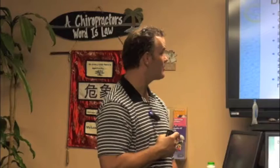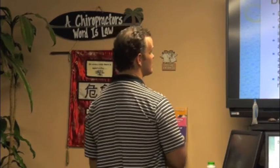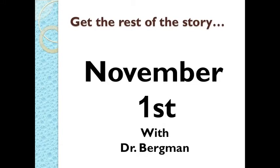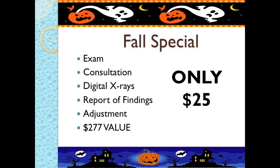Digestive enzymes — Dr. Bergman is going to talk about this soon. They are classified based on their target substrates: proteases and peptidases split proteins into amino acids; amylases break down carbohydrates — you get amylases in your saliva, which is why carbohydrates start to taste sweet as they break down into sugars; lipases split fat into three fatty acids in a glycerol molecule; and nucleases break down nucleotides. Get the rest of the story on digestive enzymes November 1st with Dr. Bergman. Today's fall special: an exam, consultation, x-rays, and a report of findings and adjustment for only $25.